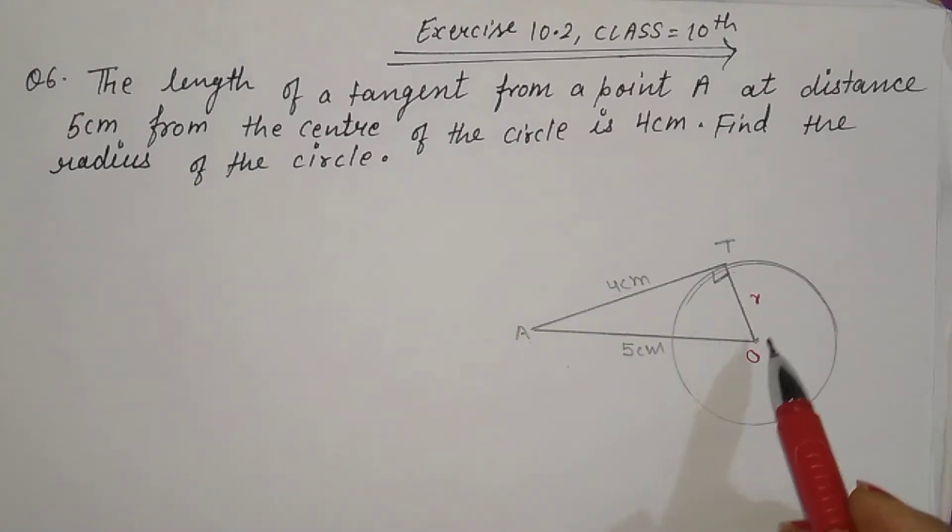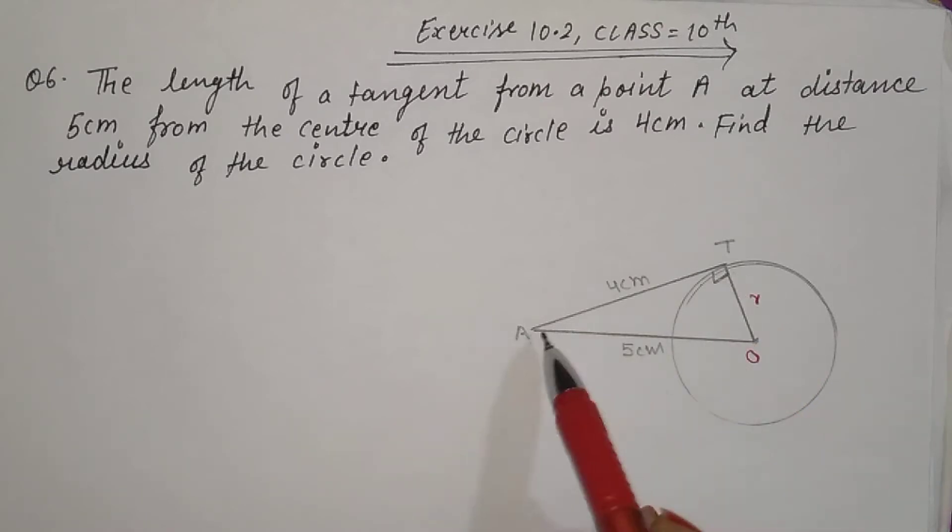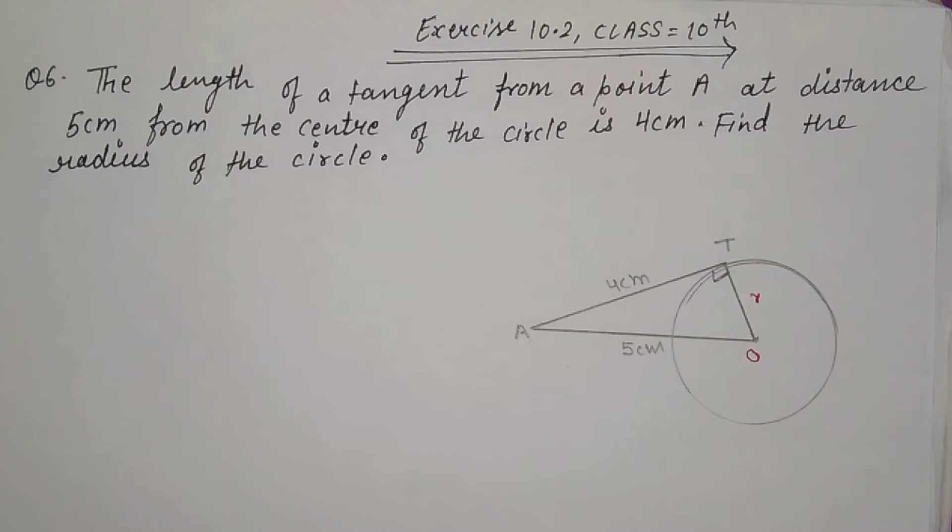And we know that OT is perpendicular on AT. That means OAT is a right angle triangle.